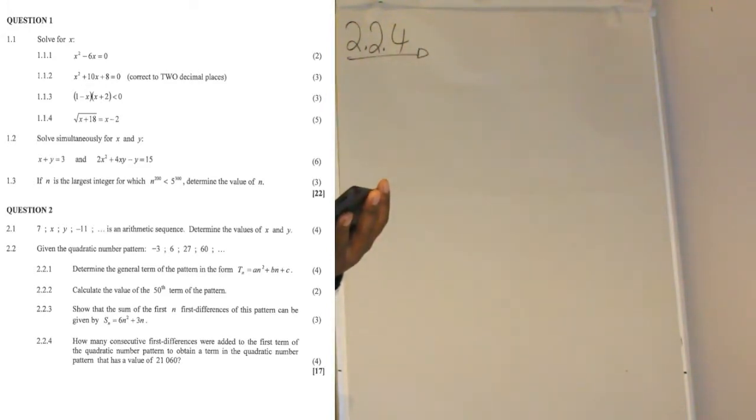How many consecutive first differences were added to the first term of the quadratic pattern to obtain a term of the quadratic pattern that has a value of 21,060?